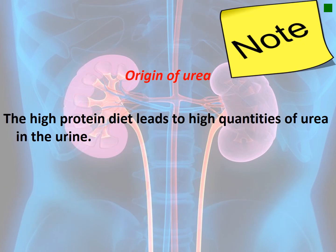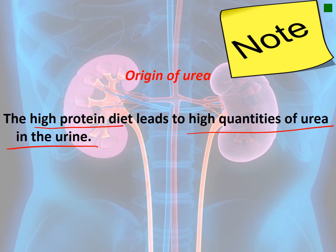The origin of urea: urea is produced due to a high protein diet. Eating food rich in protein leads to a high quantity of urea in the urine. Pay attention: high protein diet leads to high quantity of urea in the urine. Thank you, see you, bye!